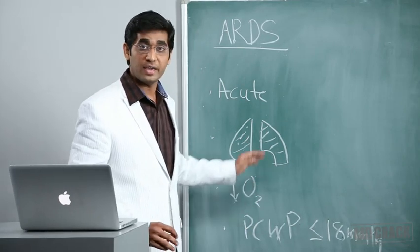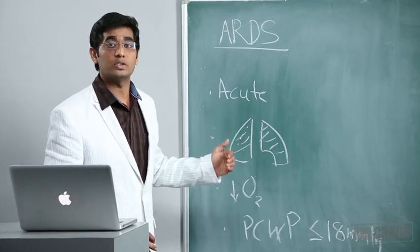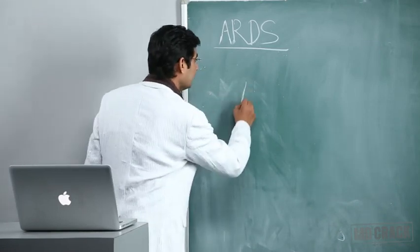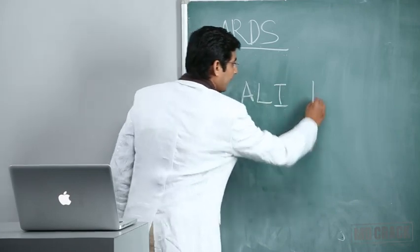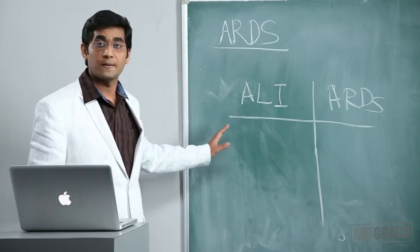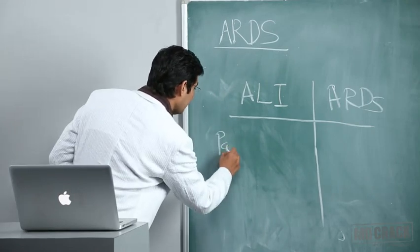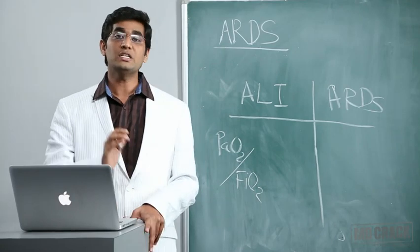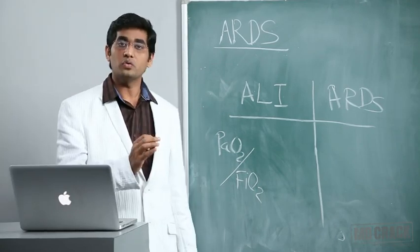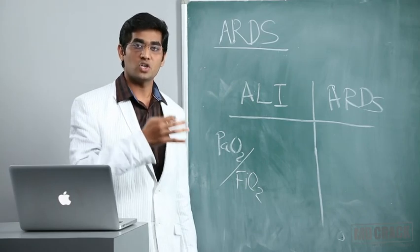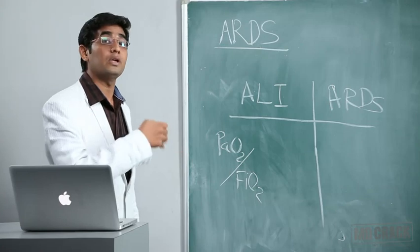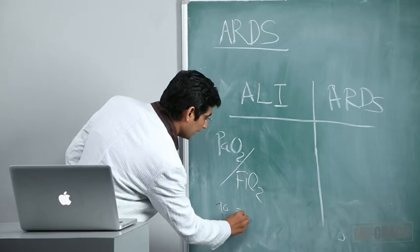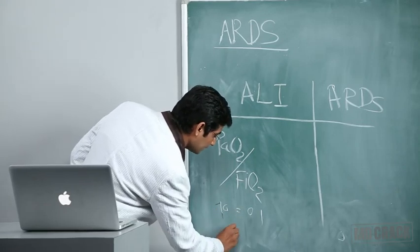The definition of ARDS depends on PaO2 - pressure of arterial O2. You can see all four points in acute lung injury (ALI) and ARDS; the difference is only oxygenation. We measure oxygenation by PaO2/FiO2 ratio. PaO2 comes from arterial blood gases. FiO2 is fractional inspired oxygen - the percentage of oxygen you're giving the patient, ranging from 10% to 100%.